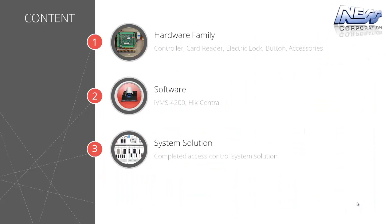If we break any access control system down, we can break it into three main categories: hardware — the controller, card readers, locks, exit buttons, etc. — the software to manage and program the system, and also the complete system structure or system solution, all of which this Hikvision access control range can handle without a problem.